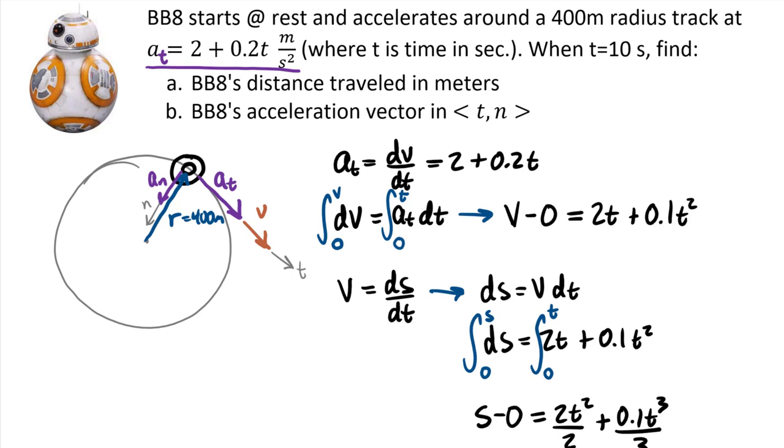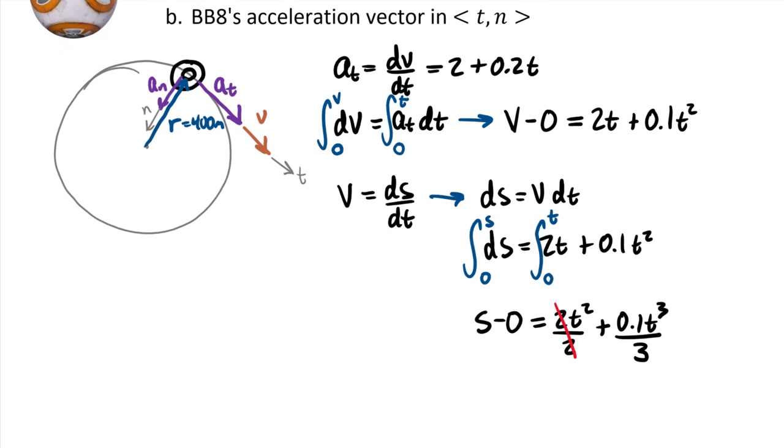we have 2t squared divided by 2 plus 0.1t cubed over 3. So of course, the 2 over 2 could cancel those out. And if you wanted to, you could divide the 0.1 by 3. But fundamentally, we end up with the equation that s is equal to t squared plus 0.1t cubed over 3. All right, so that's all of the calculus we actually need to do for this problem.